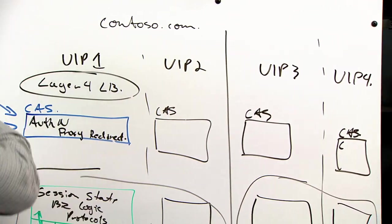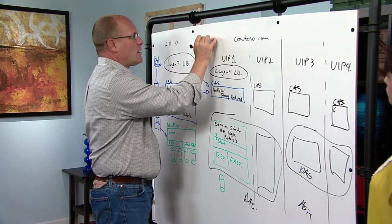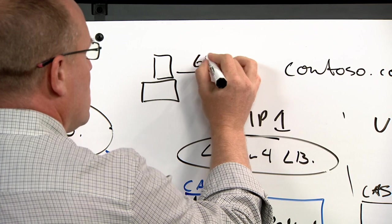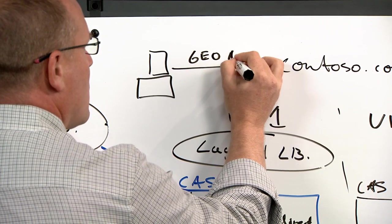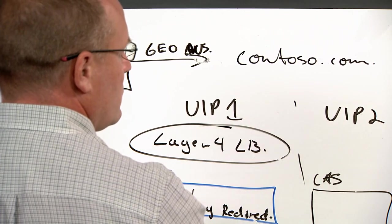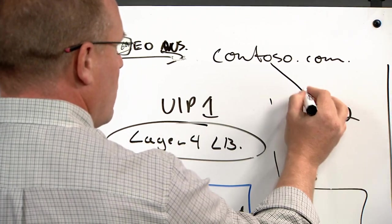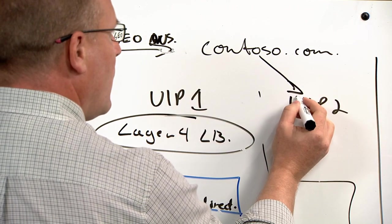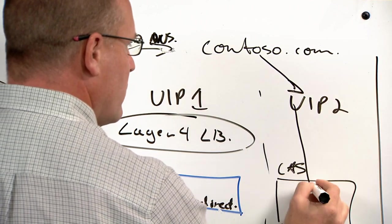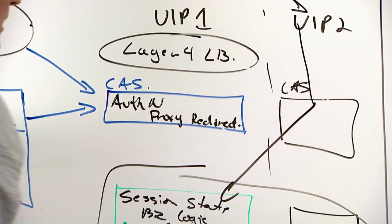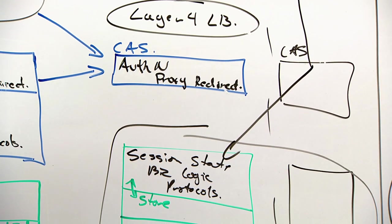So a user who's normally working somewhere in North America, you know, wants to connect, you go through GeoDNS, says, okay, looks like you're in North America. I'm going to give you a random round robin between these two vips that have been published. And I'm going to point you to vip2. And it's going to come back to the CAS server. And this CAS server is going to go back to your mailbox server in the other site.